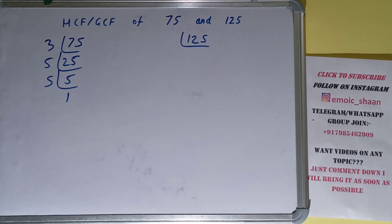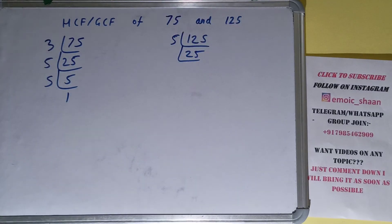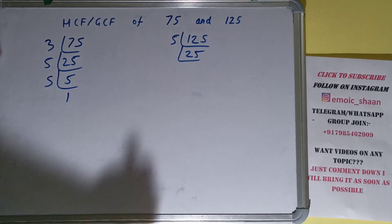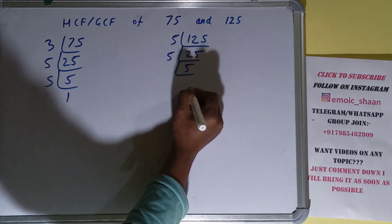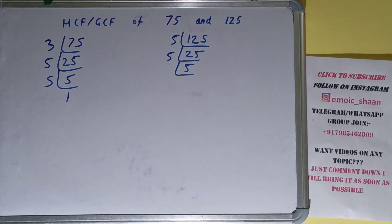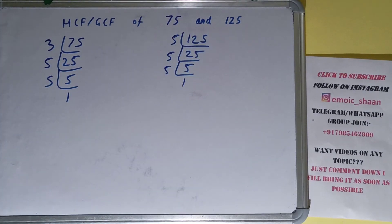Is 125 divisible by 2? No. So we'll check with the next lowest prime number, which is 3. Is 125 divisible by 3? No. So we'll check with 5. 125 is divisible by 5, so we divide and we're left with 25. 25 is again divisible by 5, so we divide and we're left with 5. 5 is again divisible by 5 and we're left with 1. So we are done with this.